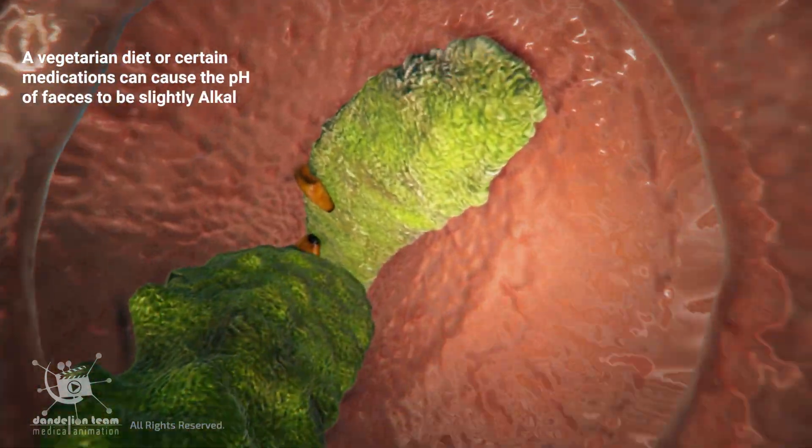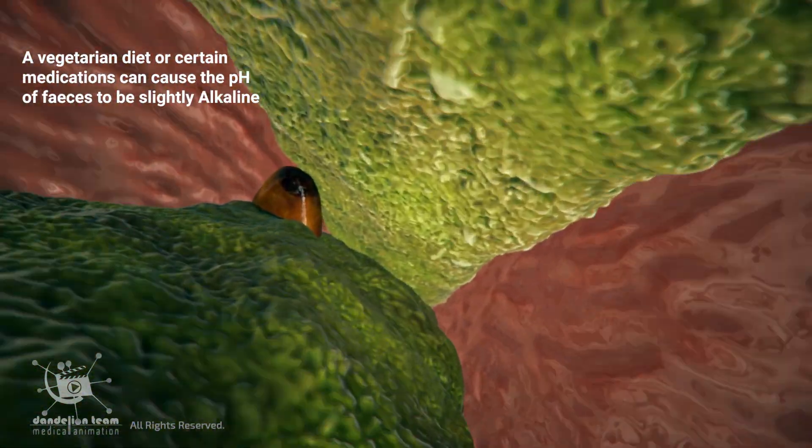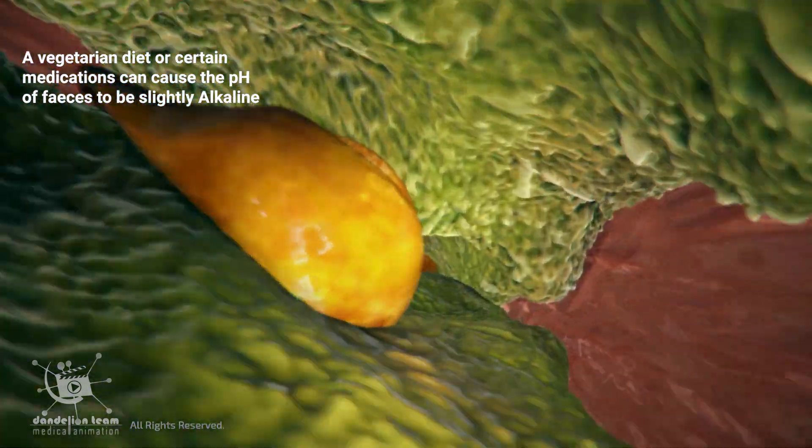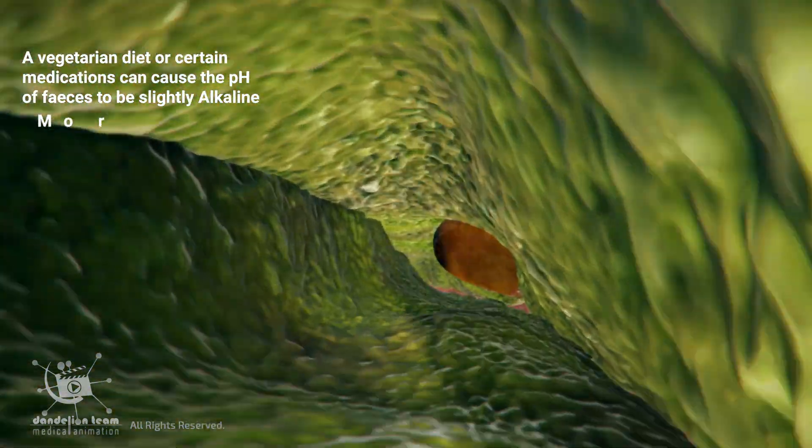A vegetarian diet or certain medications can cause the pH of feces to be slightly alkaline, more than 7.